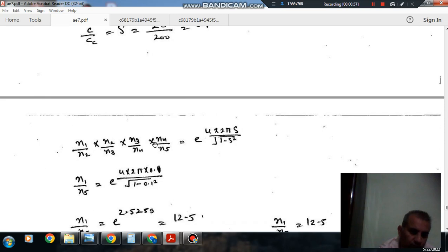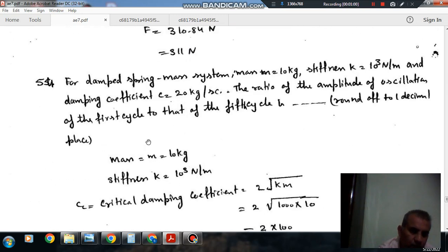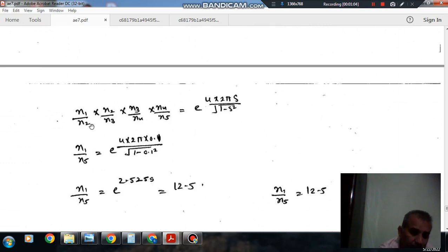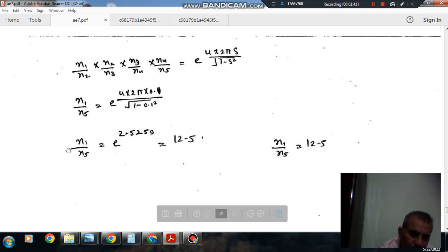And the ratio of first to fifth cycle is x₁/x₂ times x₂/x₃ times x₃/x₄ times x₄/x₅. Each ratio is e^(2πξ/√(1-ξ²)). If we multiply all these ratios, it will be e^(8πξ/√(1-ξ²)). So ξ is 0.1. Since x₂, x₃, x₄ will cancel out, we can find out x₁/x₅, which is 12.5.